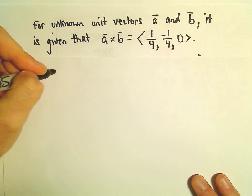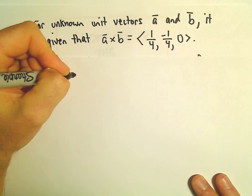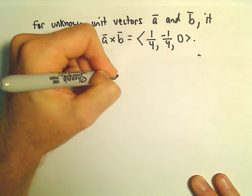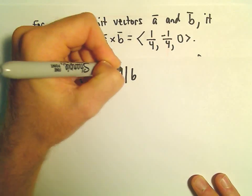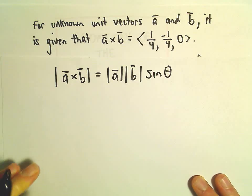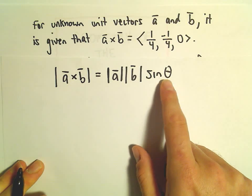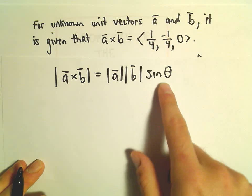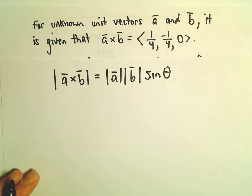We've got the nice formula that the magnitude of a cross b equals the magnitude of a times the magnitude of b times sine theta. This is going to help us relate the angle between those original vectors.